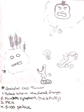Just to recap: granular cell tumor is a yellow lesion on the dorsal of the tongue. You've got punctated cytoplasm, pink and fluffy. It's PEH, and it's S100 positive.